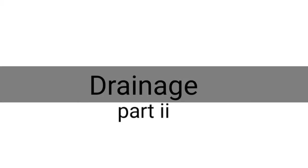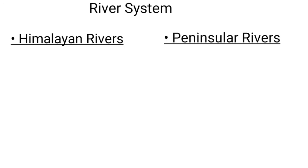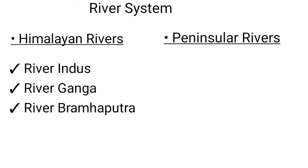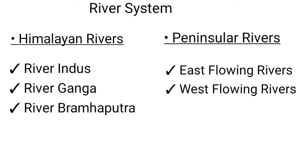Hello everyone, welcome to my channel. This is the second part of the chapter 'Drainage.' In the first part we discussed the evolution of river systems. Here we are going to discuss the different river systems of India: Himalayan rivers and Peninsular rivers. Under Himalayan rivers we have the Indus, Ganga, and Brahmaputra. Under Peninsular rivers we have east flowing and west flowing rivers.